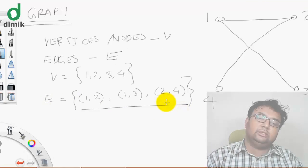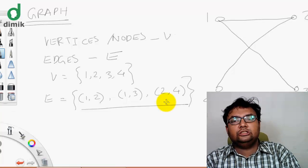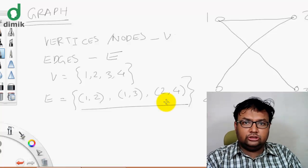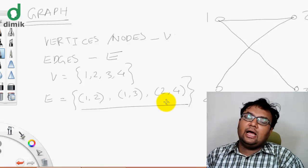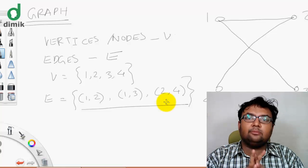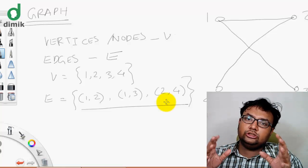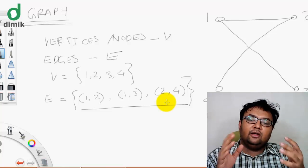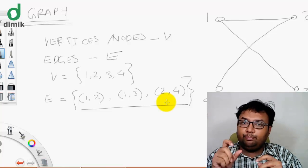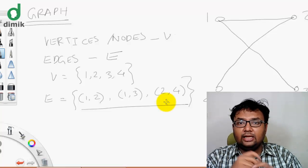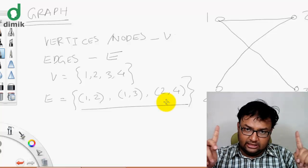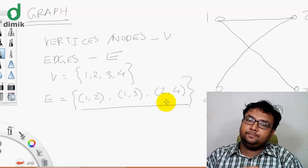So an edge is a line joining nodes. A graph has 2 sets: one set of vertices — individual points in space — and one set of edges — lines in space joining some of those nodes. So an edge is a pair of nodes that denotes the connection. Line, link, edge — all mean a connection between nodes.